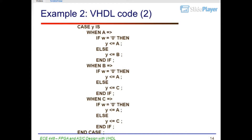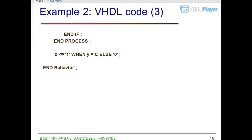Case Y is: when A => if W = '0' then Y <= A; else Y <= B; end if. When B => Y <= C. When C => end case. End if. End process. Z <= '1' when Y = C else '0'. End behavior.